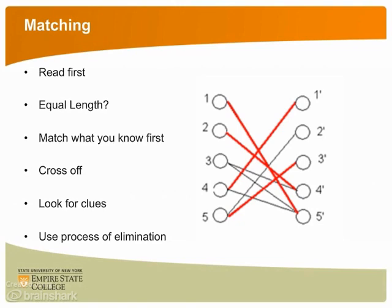When faced with matching questions, read through both lists first. Are there more options than questions? This adds a level of difficulty. As always, do the ones you know first — you may as well make it easy on yourself. Cross off options as you use them. Use any logical clues you can, such as plural or singular forms, or vowel and consonant sounds like A or AN. If all else fails and you aren't sure, use process of elimination and make sure you answer all the questions.